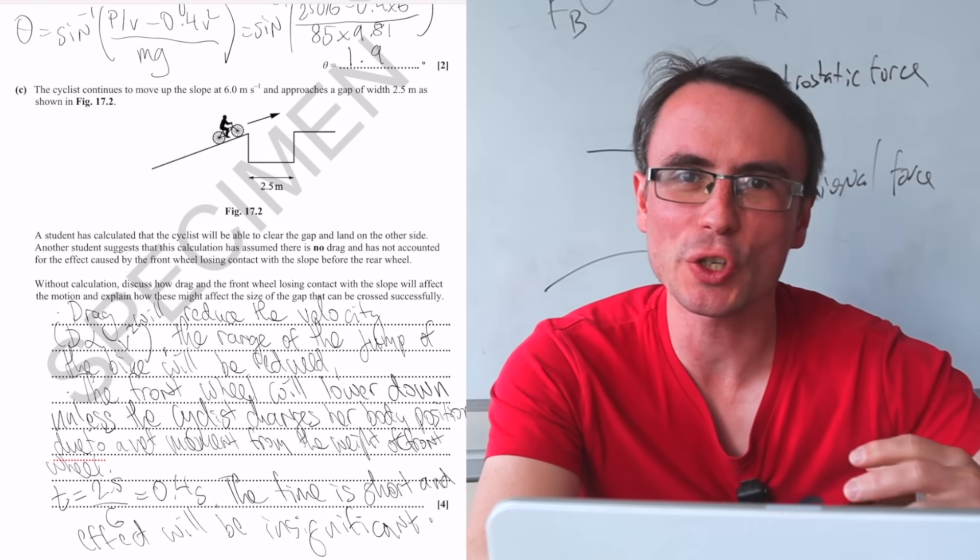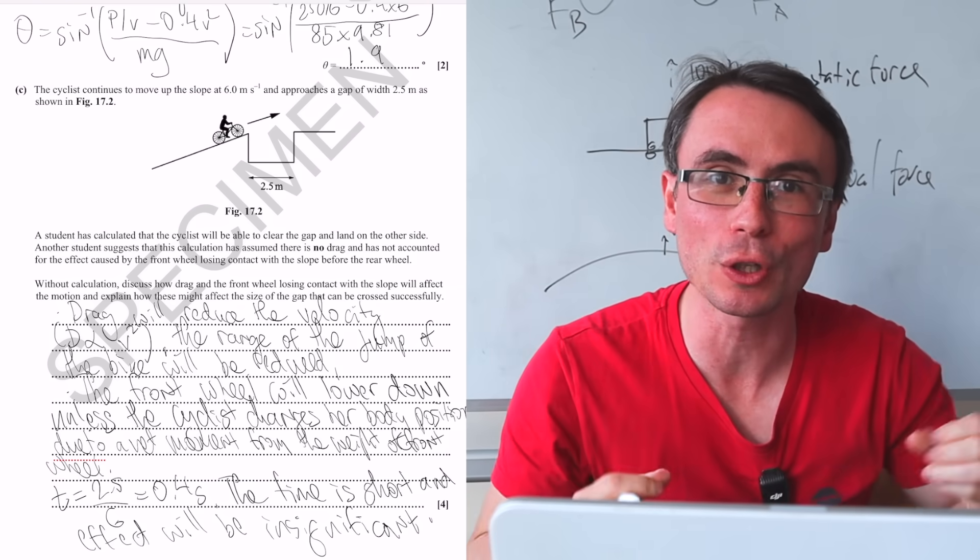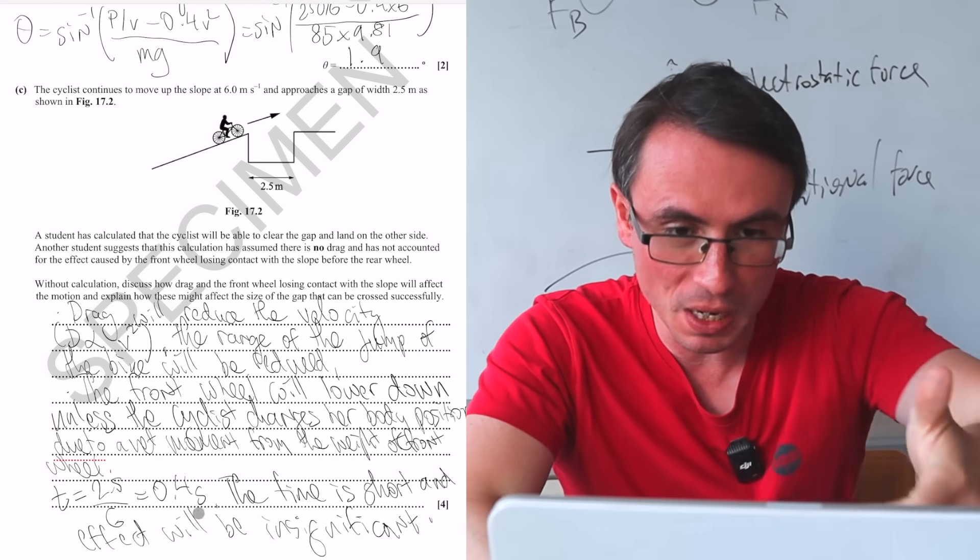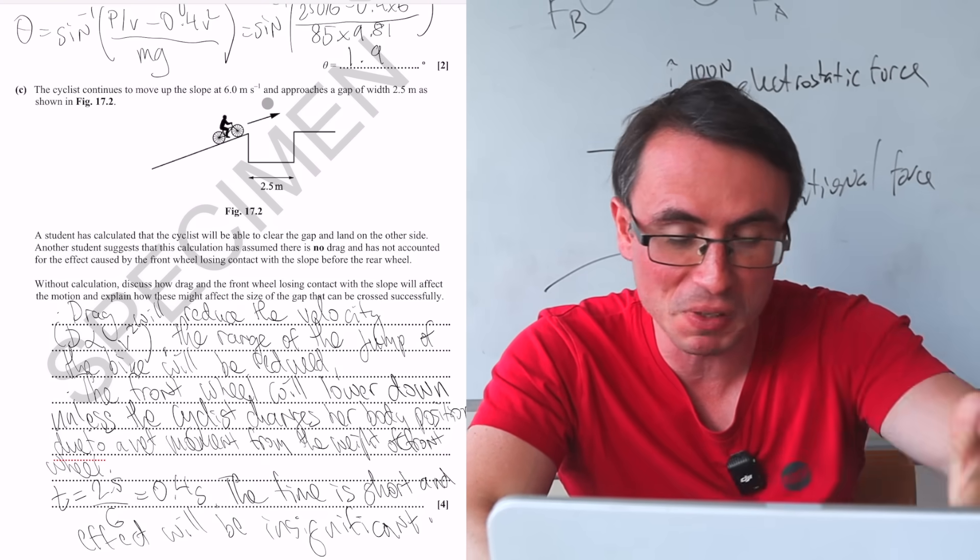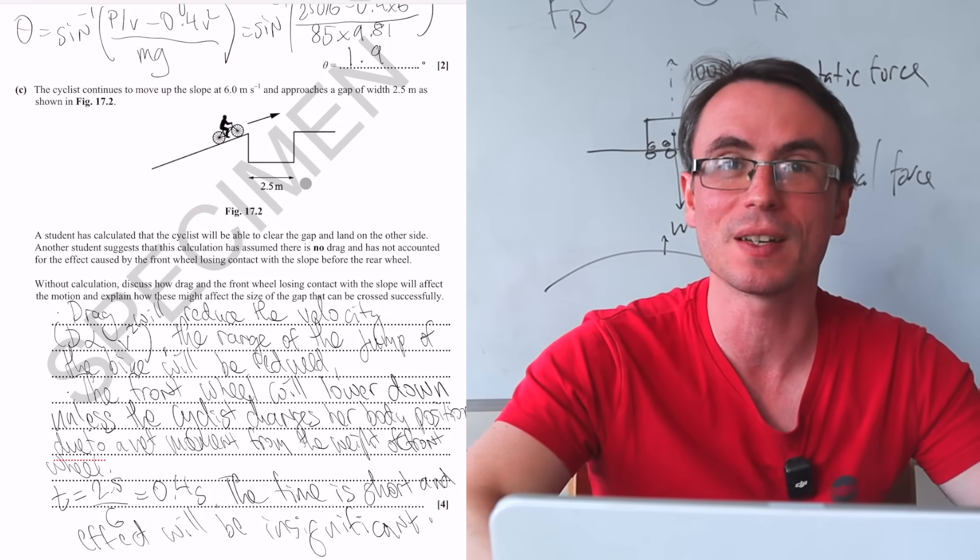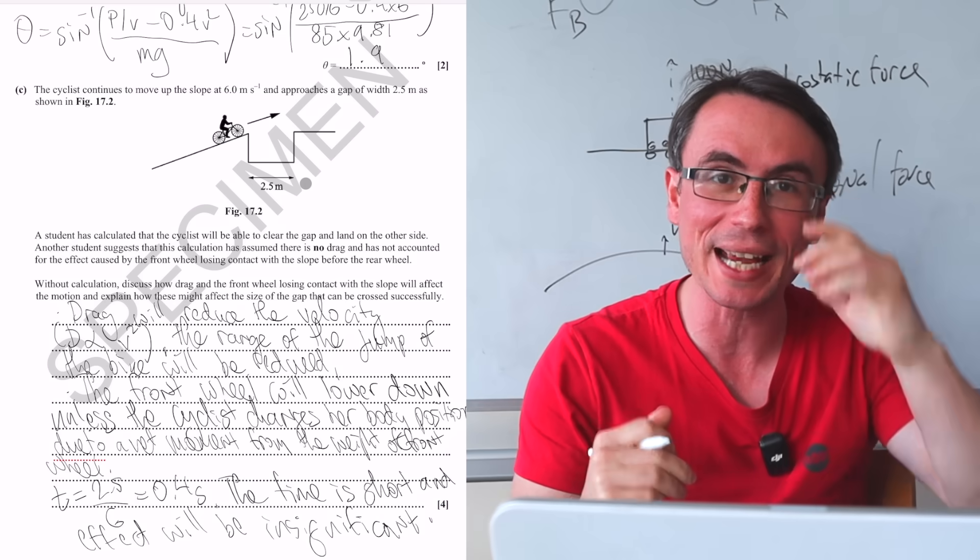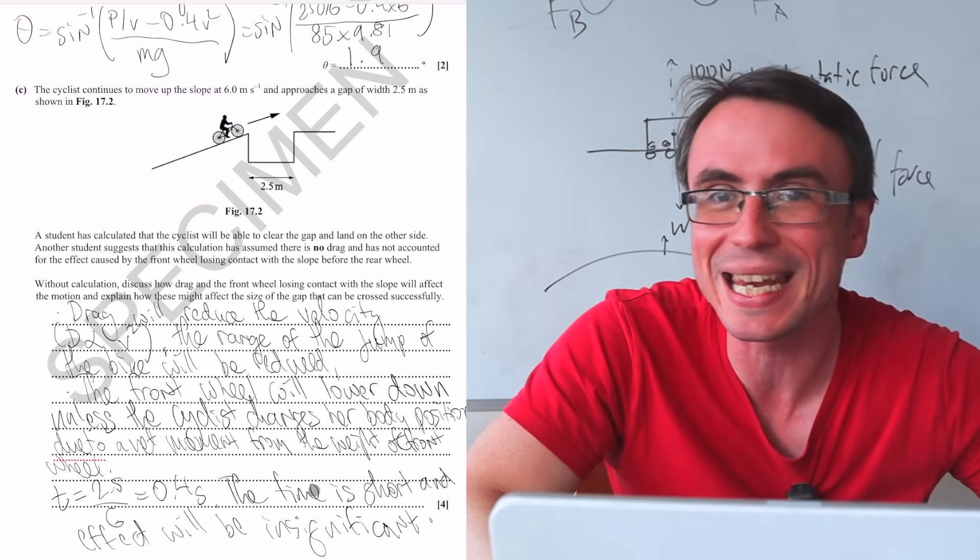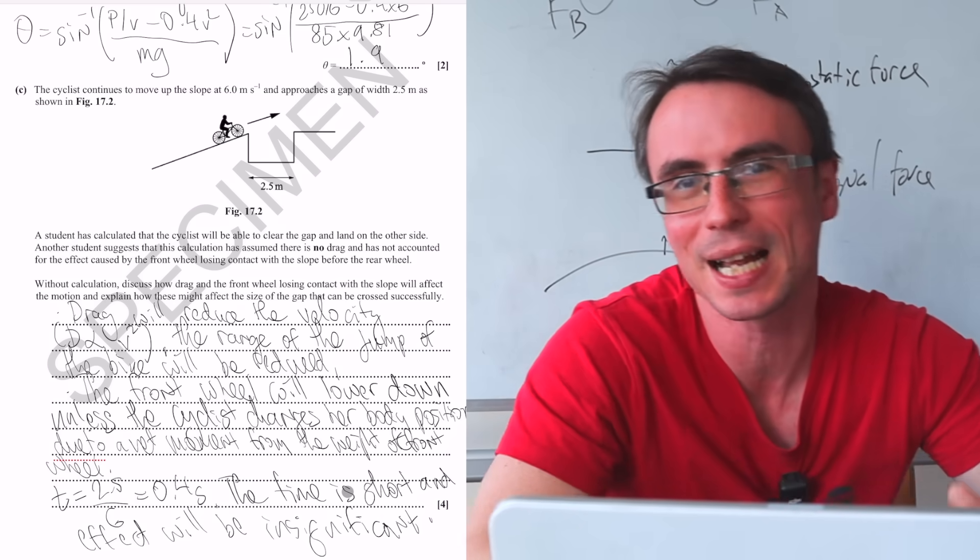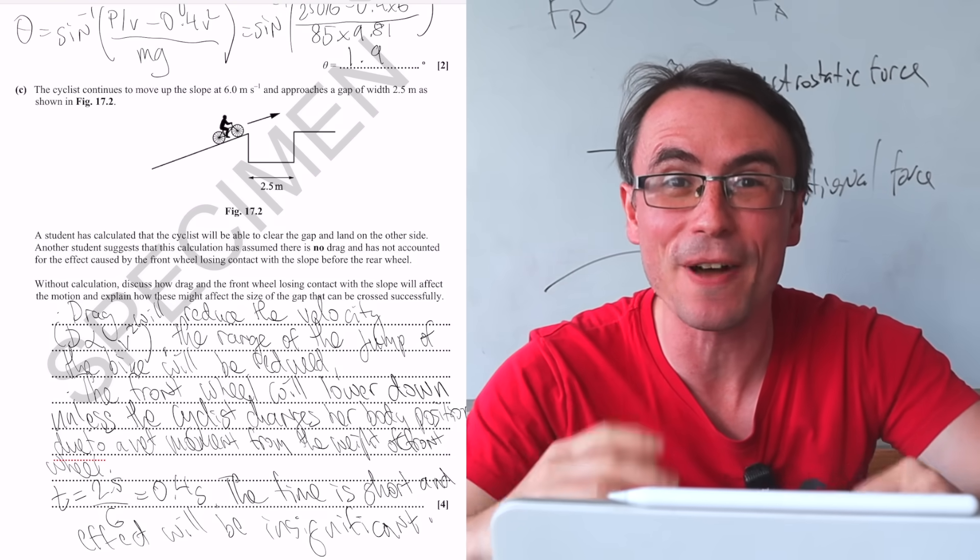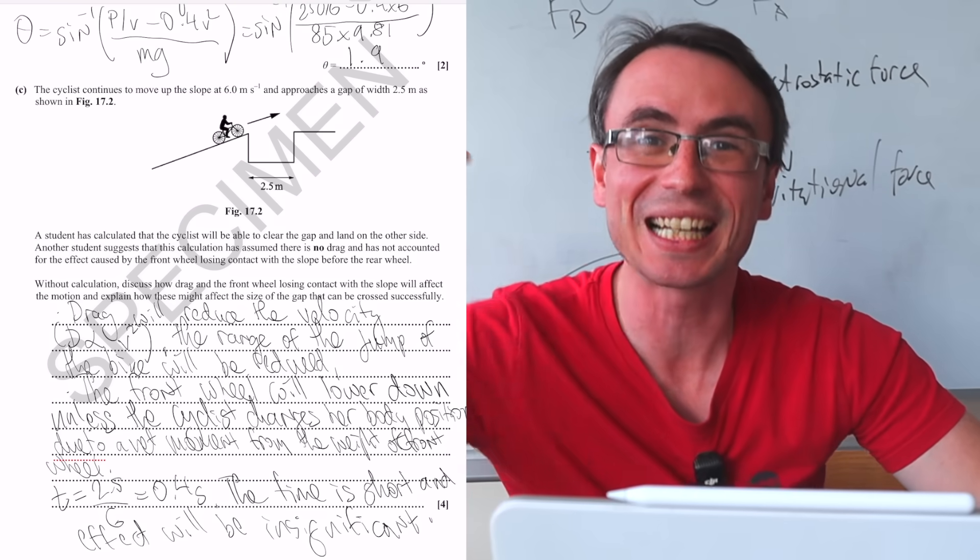The trick with suggest and discuss questions is to base your conclusions on real correct physics. We know that if she's traveling at 6 meters per second, and the gap is 2.5 meters, it's going to be way less than a second for her to cross the gap. So we know that what we've written here has to be true, and it will very likely score some marks. Good luck tomorrow, guys. For some more invaluable question practice, click over here.